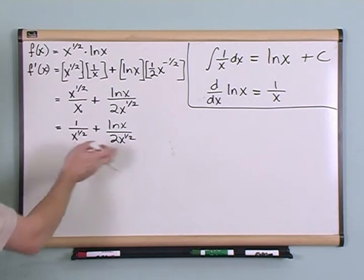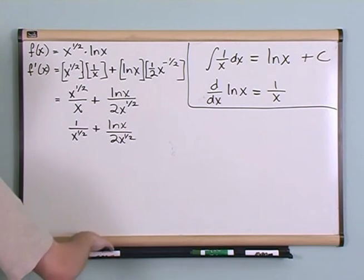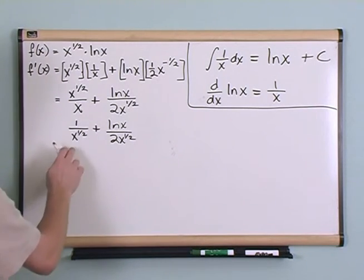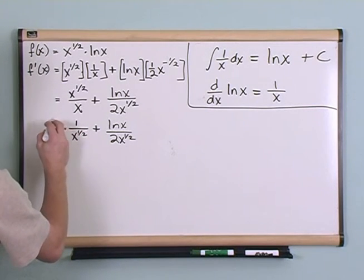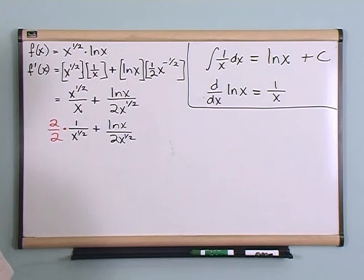And then over here you have the natural log of x over 2 times x to the one-half. Now this is basically the answer, and you could circle that as your answer, but if you wanted to tidy things up just a little bit, then you could try to get a common denominator here, and the simplest way you could get a common denominator is just to multiply this fraction by 2 over 2, which of course is just 1, and so I haven't changed anything.